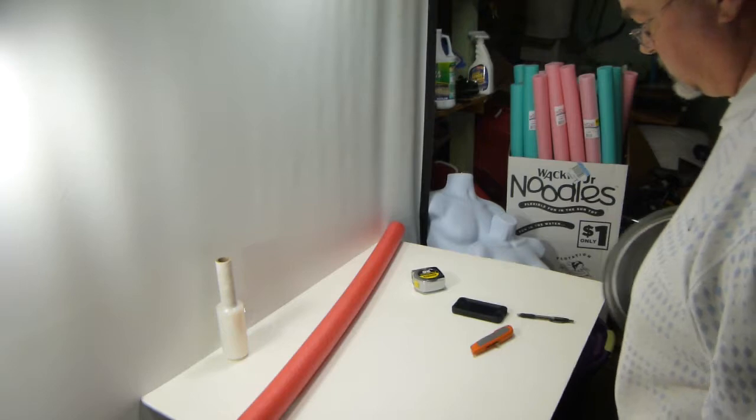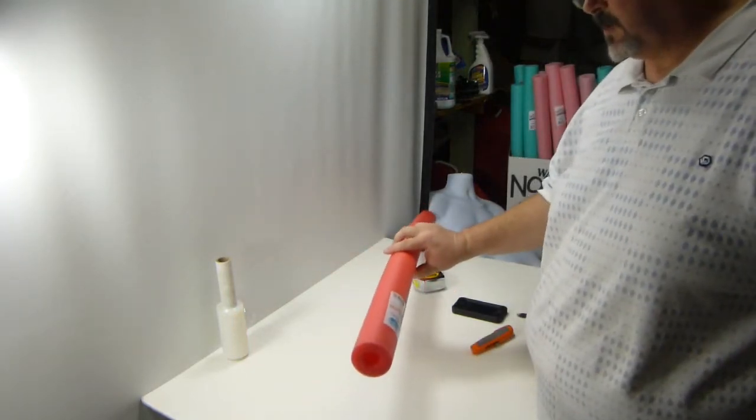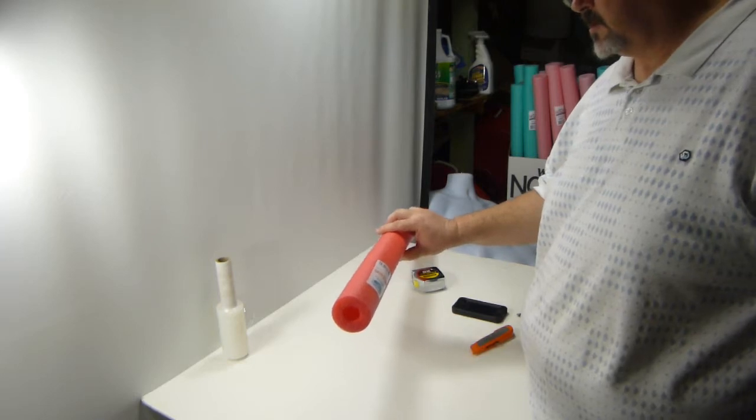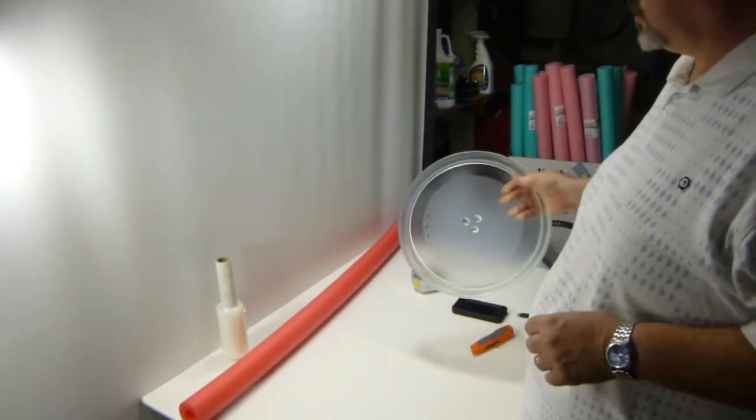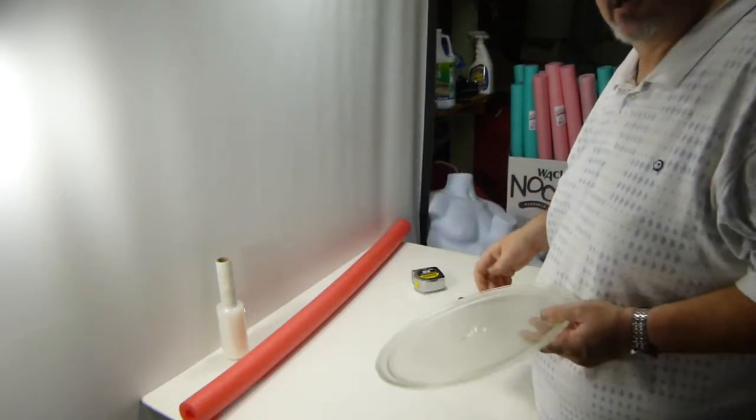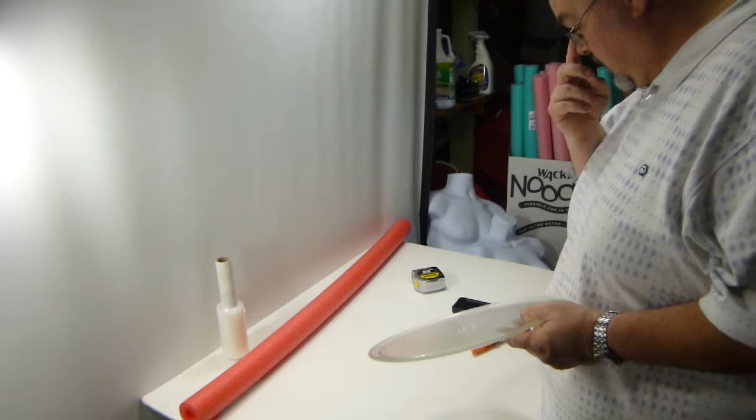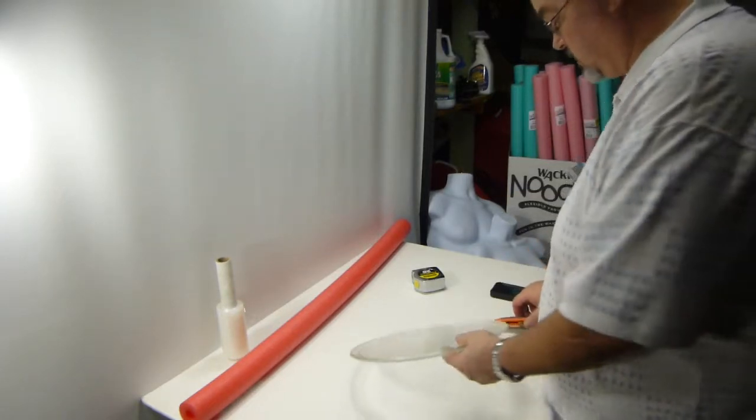The past few times pool noodles have come up in discussions, I've had people ask me how I package glass microwave oven trays for shipment using pool noodles, so I figured why not make a video on it. I apologize for the quality; I'm using my point-and-shoot camera to make this.